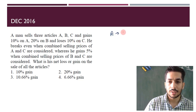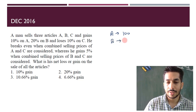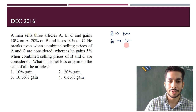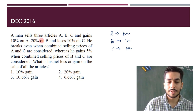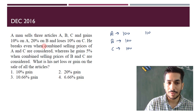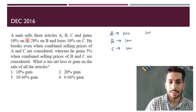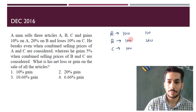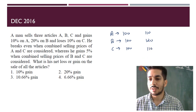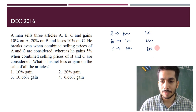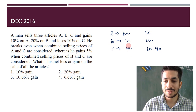Assume each article is priced at 100 rupees. He gains 10% on A, so the selling price of A is 110. He gains 20% on B, so the selling price of B is 120. He loses 10% on C, so the selling price of C is 90 — not 110. I've just taken these random values because I don't want to solve equations in the form of X, Y, and Z.